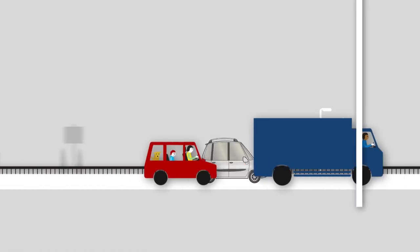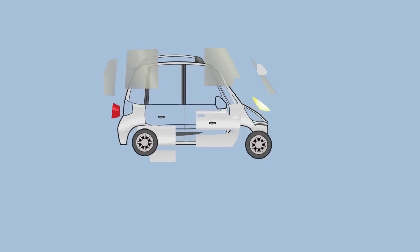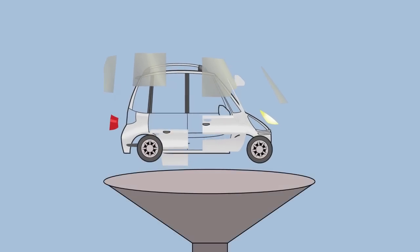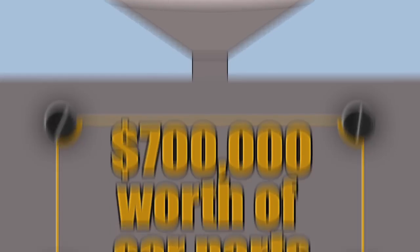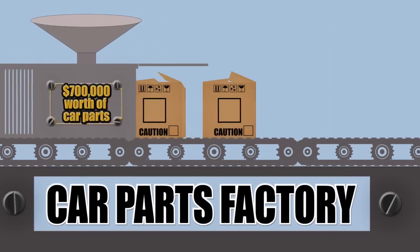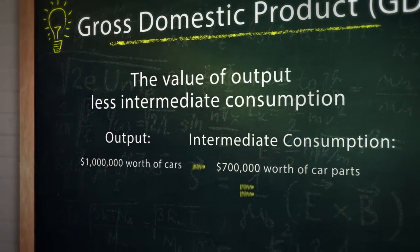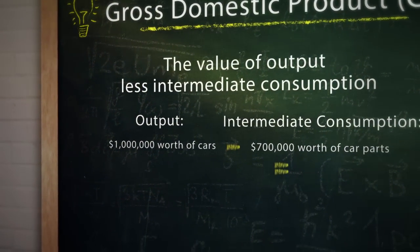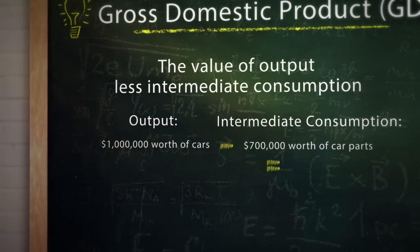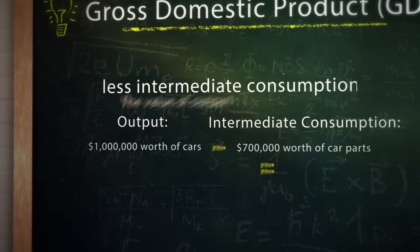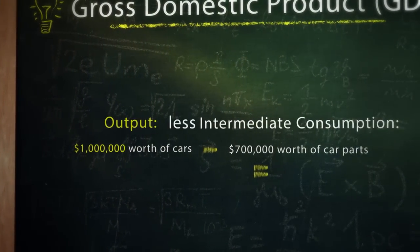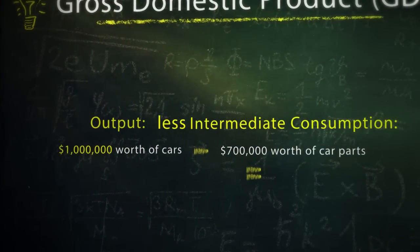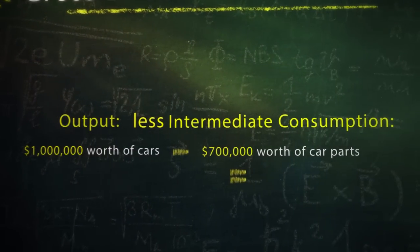Well, let's say the automobile assembly plant needs to purchase $700,000 worth of car parts from the motor vehicle parts manufacturing industry before it can fabricate the $1 million worth of cars. The $700,000 worth of car parts is considered to be intermediate consumption. To return to the definition again, GDP in this case is the output of $1 million worth of cars, less the intermediate consumption, which is $700,000 for the car parts.